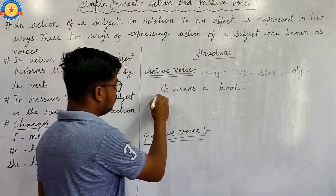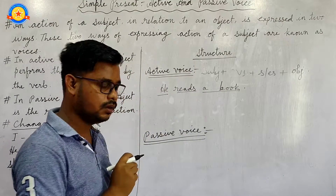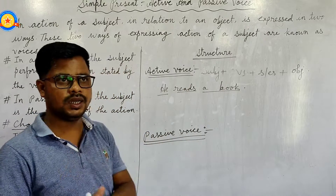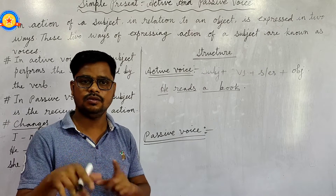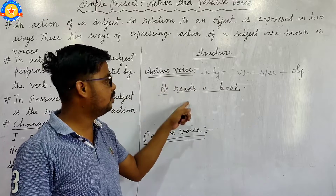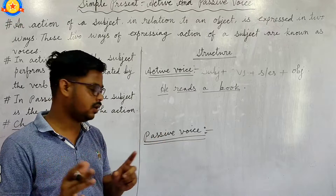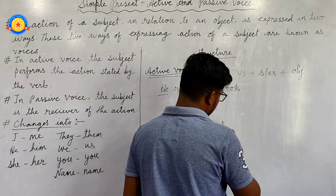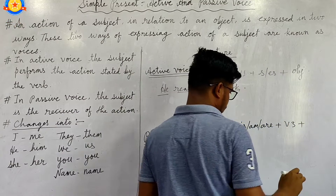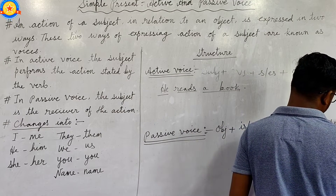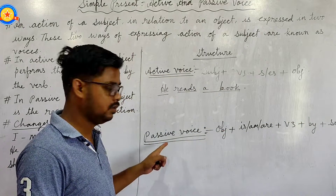To change into passive voice, an object is needed — without an object, we cannot change into passive voice. The formula or pattern for passive voice is: Object + is/are + Verb (3rd form) + by + Subject. This is the pattern to form passive voice in simple present tense.